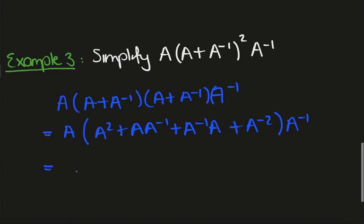Then these two are the identity, so I end up with A times A squared plus 2 times the identity matrix plus A to the minus 2, A plus A to the minus 1.